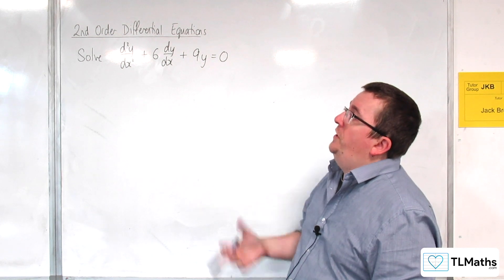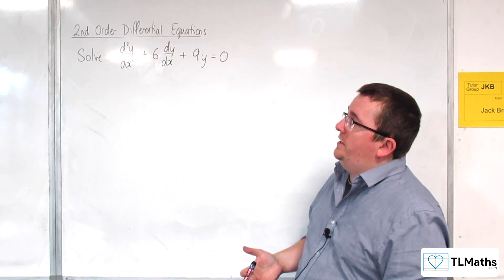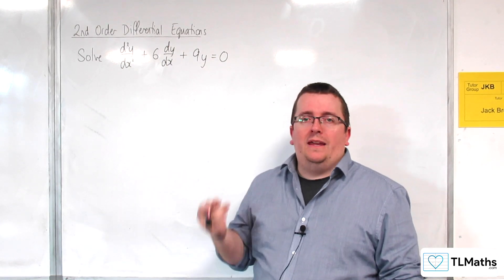Let's say I want to solve d²y/dx² + 6dy/dx + 9y = 0.